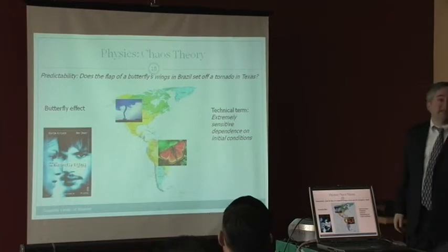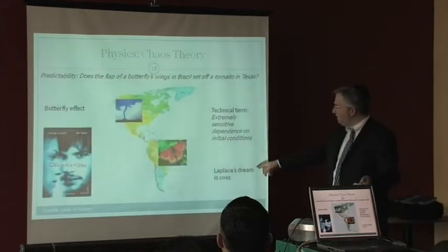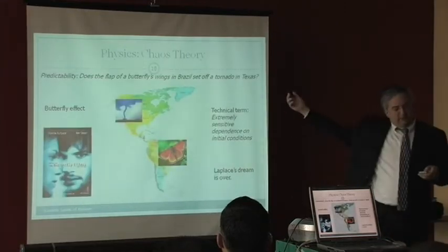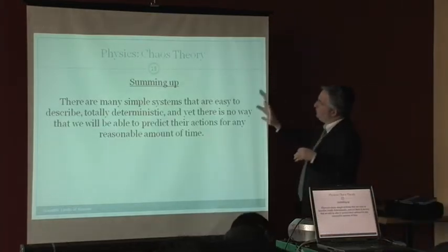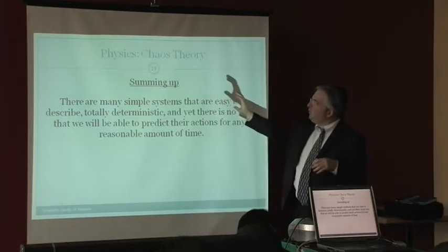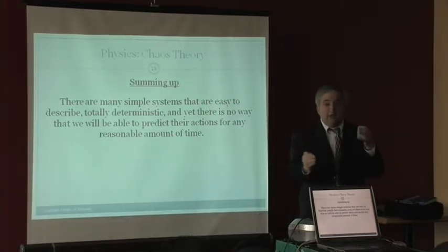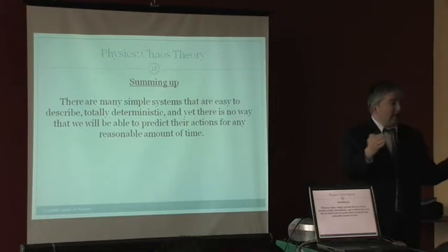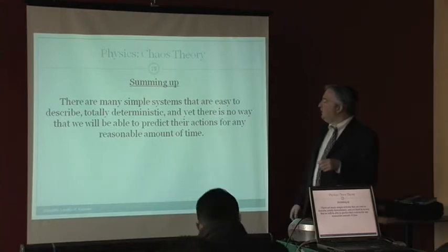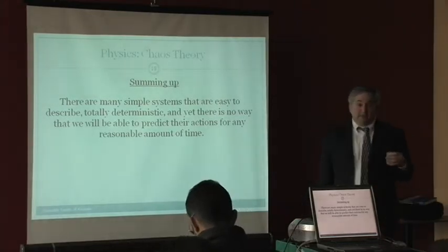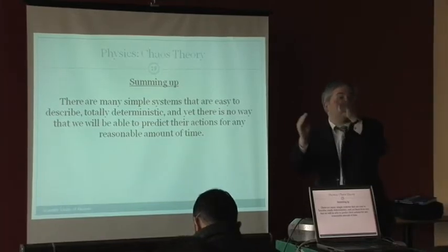Now, what does that say about our ability to predict the future? What it said was Laplace's dream is over. What we're trying to say is as follows. In the chaos theory, what it says is there are many simple systems that are easy to describe, totally deterministic. You can write out equations that tell you exactly what's going to happen perfectly. And yet, there's no way that we'll be able to predict their actions for any reasonable amount of time. You can predict a little bit because the little changes didn't cause the major changes yet.